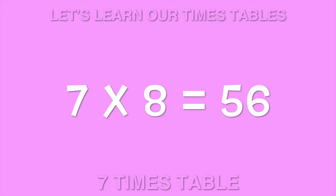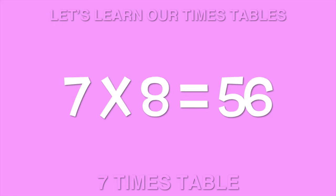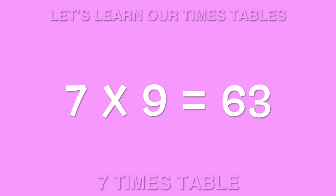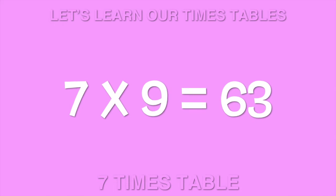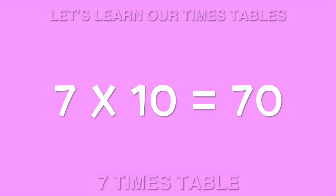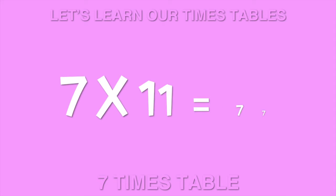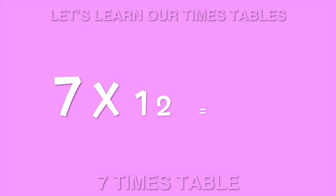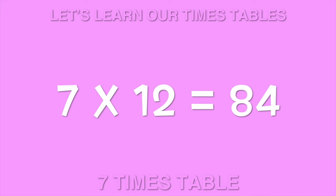7 times 8 is 56. 7 times 9 is 63. 7 times 10 is 70. 7 times 11 is 77. 7 times 12 is 84.